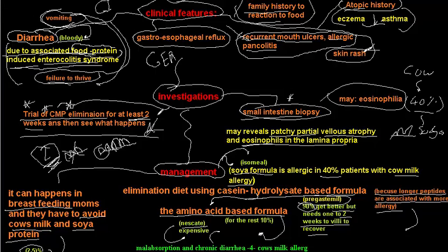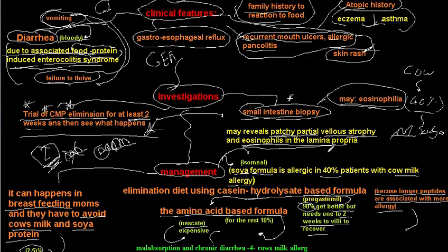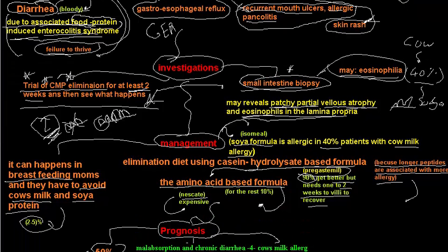If the elimination trial does not yield a response, we proceed to small intestinal biopsy. The biopsy may reveal patchy partial villus atrophy — note this is partial, unlike the subtotal or total villus atrophy seen in celiac disease. Eosinophils are seen in the lamina propria in many cases, and eosinophilia may be found in the blood as well.